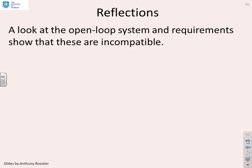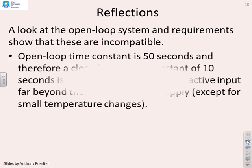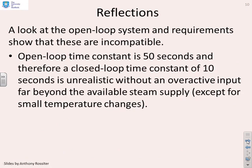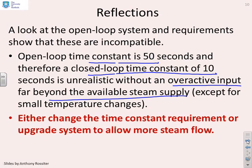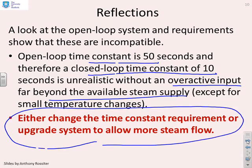What does this tell us? If we look at the open loop system and the requirements, we see they're incompatible. The open loop time constant is 50 seconds and therefore if we want a closed loop time constant of 10 seconds, the only way we can achieve this is with an overactive input. At the moment that's far beyond the available steam supply, unless you're just asking for very small temperature changes. You have a choice: either change the time constant requirement and accept that this heat exchanger has to have a slower time constant, or you have to upgrade your system in order to allow more steam flow.